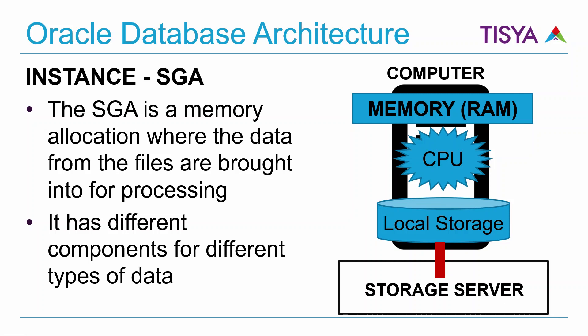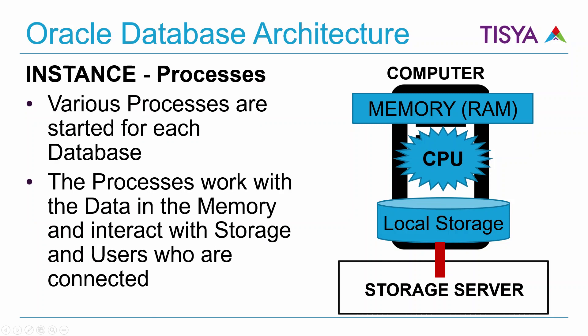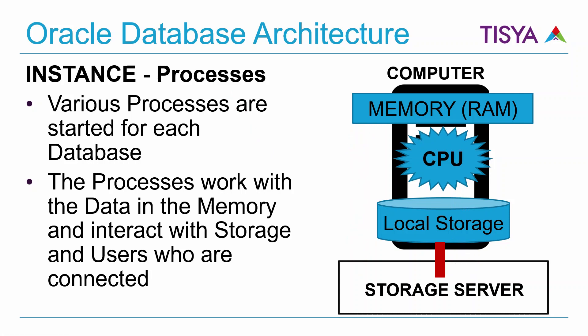The SGA has various components, which I have explained in the traditional non-CDB architecture playlist — things like the buffer cache, shared pool (which is made up of the library cache and dictionary cache), etc. These are all within the SGA. To read data from storage and bring it into the SGA, or to process data and write it back to storage, we have various background processes available within Oracle Database.